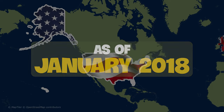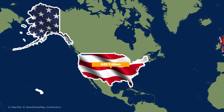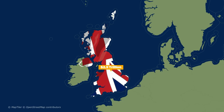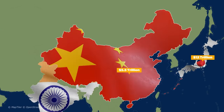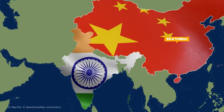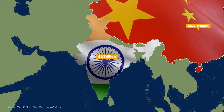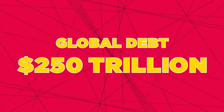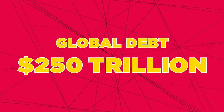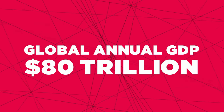As of January 2018, the US had a national debt of around $25 trillion, the UK was $2.5 trillion in debt, Japan was $12 trillion in debt, China was $5.5 trillion in debt, and India's outstanding debt stood at roughly $2 trillion. Globally, debt levels have never been higher, and the total global debt is over $250 trillion. Compare that to the global annual GDP, which is roughly $80 trillion.